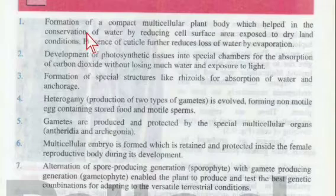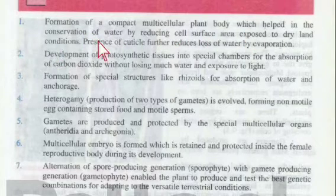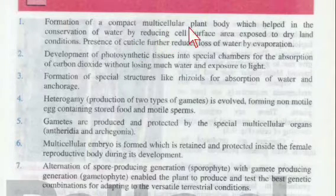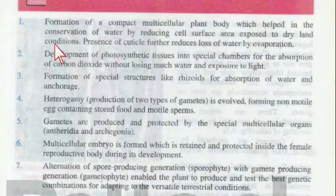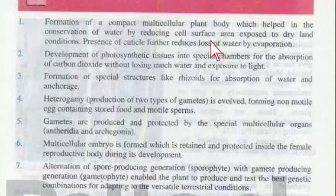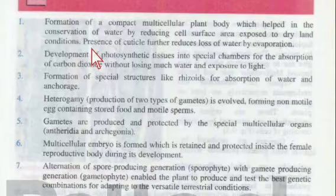The first adaptation is the formation of a compact multicellular plant body, which helped in the conservation of water by reducing the cell surface area exposed to dry land conditions. When they developed a multicellular body with more cells, they learned to conserve water by reducing the cell surface area exposed to dry conditions.